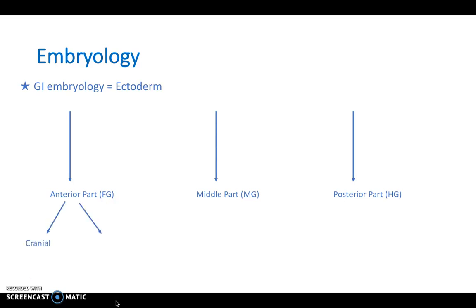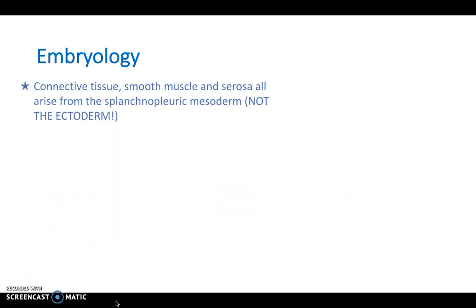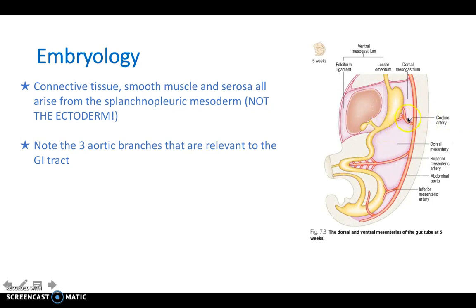The anterior part of the gut can be further subdivided into cranial and caudal aspects — the cranial aspect gives rise to the pharynx and pharyngeal arches. The midgut is a continuation of the yolk sac. Remember the three aortic branches — the celiac artery, the superior mesenteric artery, and the inferior mesenteric artery — each supplying the relevant foregut, midgut, and hindgut structures respectively.